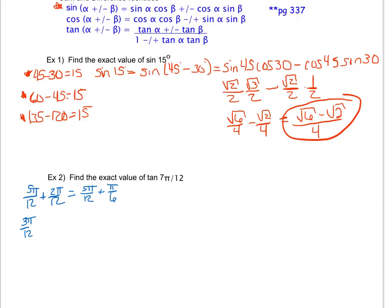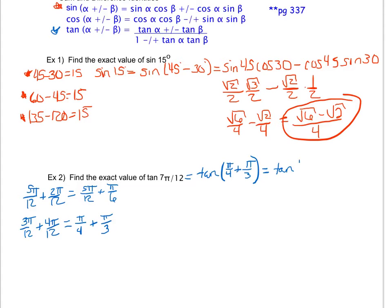How about 3π/12 plus 4π/12? Those add to be 7π/12. Now I'll check what those reduce to. That becomes π/4 plus π/3, and those are both on my unit circle. So I'm going to rewrite tangent of 7π/12 as tangent of π/4 plus π/3. Then I use the tangent addition identity: when I'm adding I add on top and subtract on the bottom, giving me tangent of π/4 plus tangent of π/3, all over 1 minus tangent of π/4 times tangent of π/3.